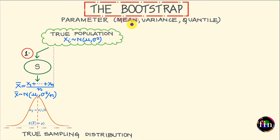Coming back to the population mean, our focus is not only to estimate the population mean but also to assess how accurate our estimate of the population mean is. For this purpose, we will need a few statistical properties of our chosen mean estimator — for example, the standard error and the sampling distribution of our mean estimator.